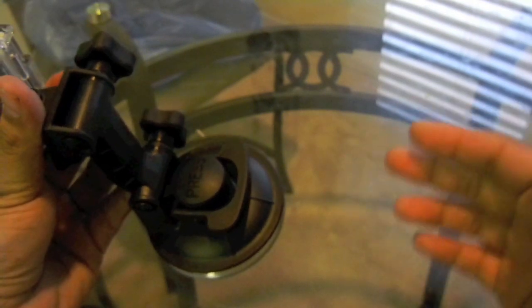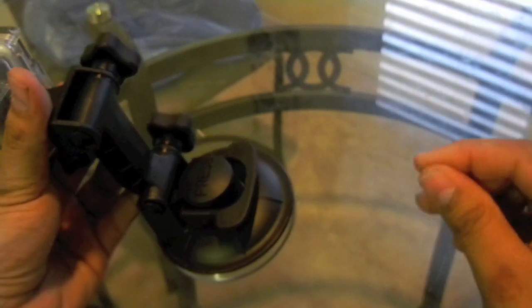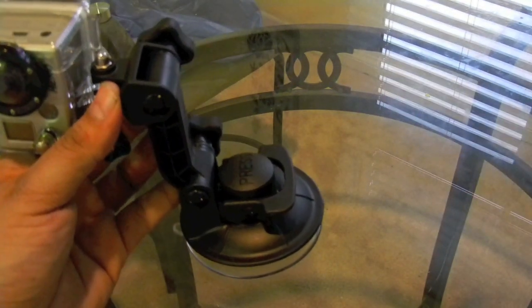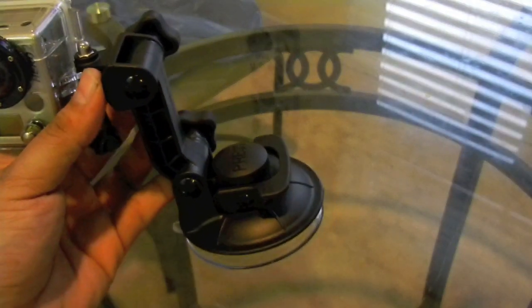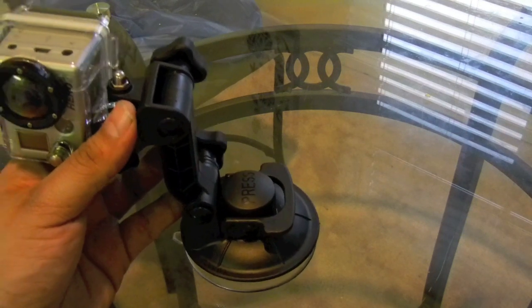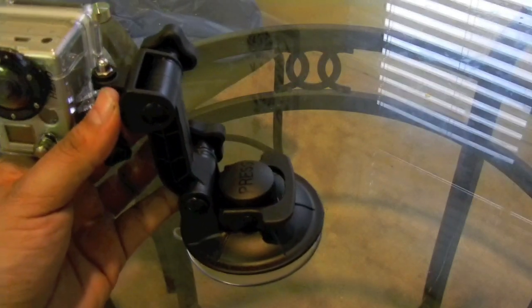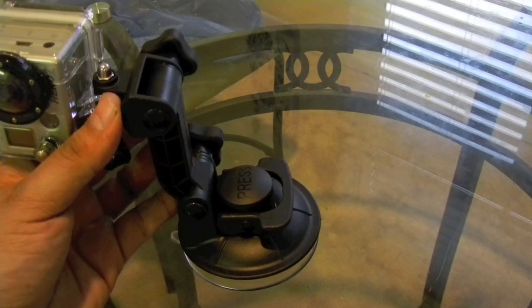Remember, the suction cup works the best on a flat surface with no pores. This is the way you install this. First of all, when you put it in your car and you mount it outside, please guys, be sure to clean the surface. Try to get all the dirt. Just use a wet napkin or something and some alcohol, rub it. That way it doesn't fall and you don't lose your camera.